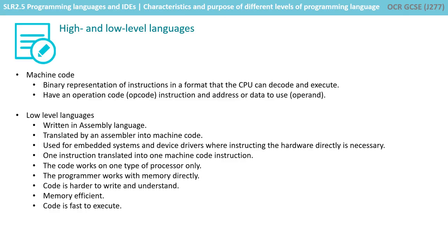Low-level languages are written in assembly language. They are translated by an assembler into machine code. They're typically used these days for embedded systems and device drivers, where instructing the hardware directly is necessary. One instruction is translated into one machine code instruction. The code works on only one type of processor. The programmer works with the memory directly. The code is harder to write and understand, but is very memory efficient and very fast to execute.